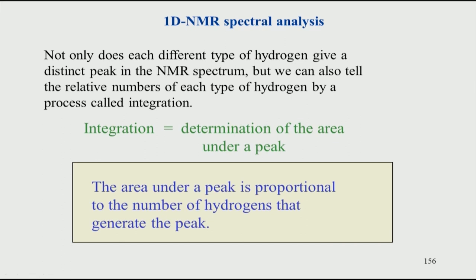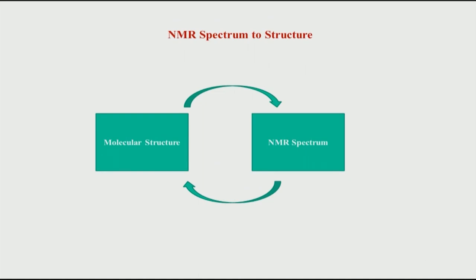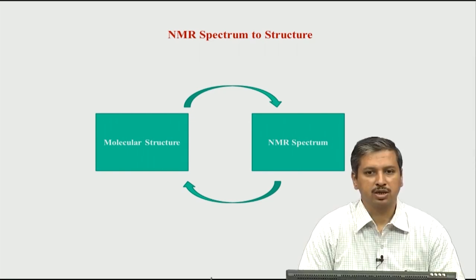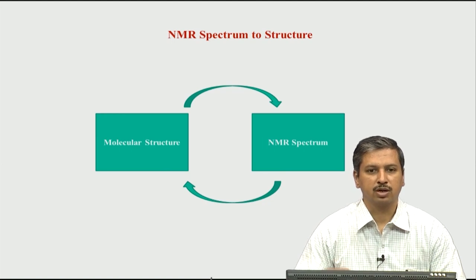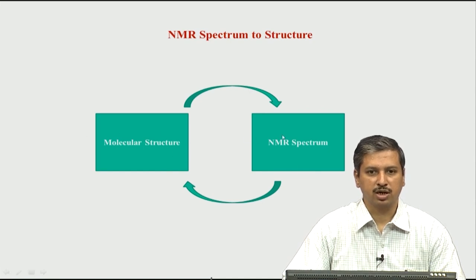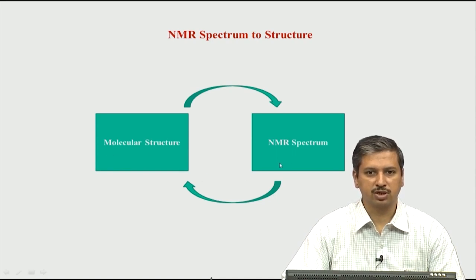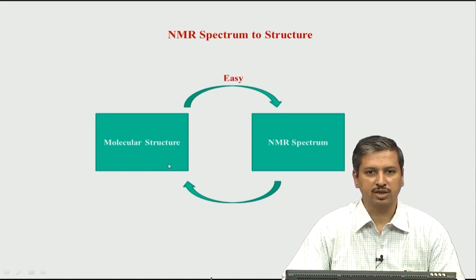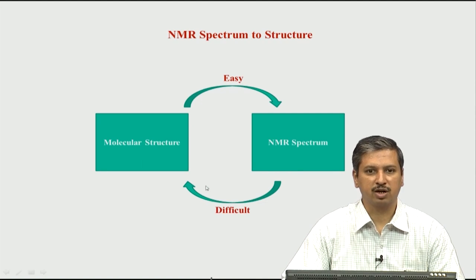We will see as we go on how these three parameters — chemical shift, J coupling, and intensity — are used. One has to understand in NMR spectroscopy that if you know the structure of a molecule, you can generate an NMR spectrum computationally. Similarly, if you know the spectrum you can get the structure. Going from spectrum to structure is what we typically do. But going from structure to spectrum is fairly easy compared to going from spectrum to structure — that is the difficult part.